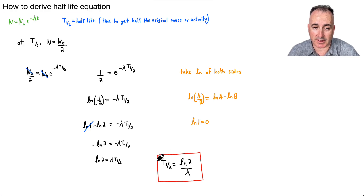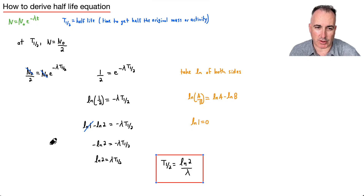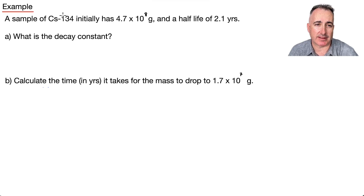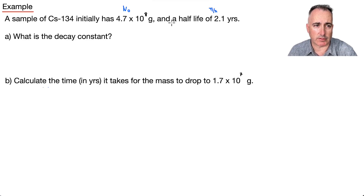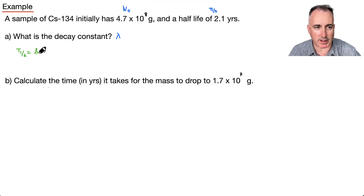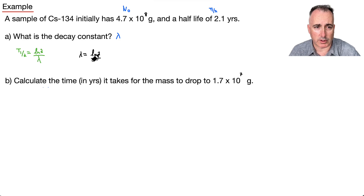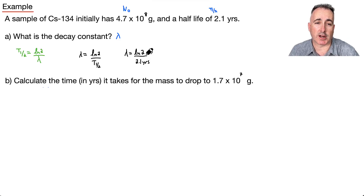We've actually derived it from first principles — we've shown where it comes from. It's good experience to feel more comfortable with these exponentials. Now a sample problem: we have a sample of cesium-134 with an initial mass of 4.7 times 10 to the 8 grams — that's N₀. It has a half-life of 2.1 years — that's T½. We want the decay constant lambda, so we use lambda equals ln 2 over T½.